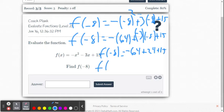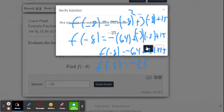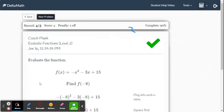So f of negative 8 equals, well, negative 64 plus 24, that gives us negative 40. And then negative 40 plus 15 is going to be negative 25. So let's see if we got it correct. We go down to our answer. We're going to enter in negative 25 and submit and get the green check mark.